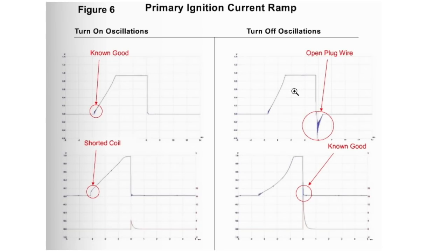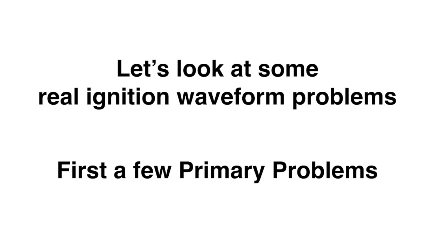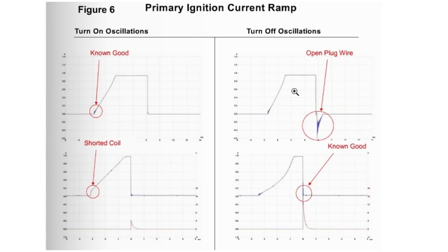First, a few primary problems. Here are four primary ignition current waveforms. The top left is a good one — it has current limiting, so look at that area going up and then limiting the current. The one below almost looks like a non-current-limited coil, but look at the area inside the red circle — see the difference from the one above. The top right has an open plug wire in the primary, indicated by the negative voltage. And the bottom right is a known good.